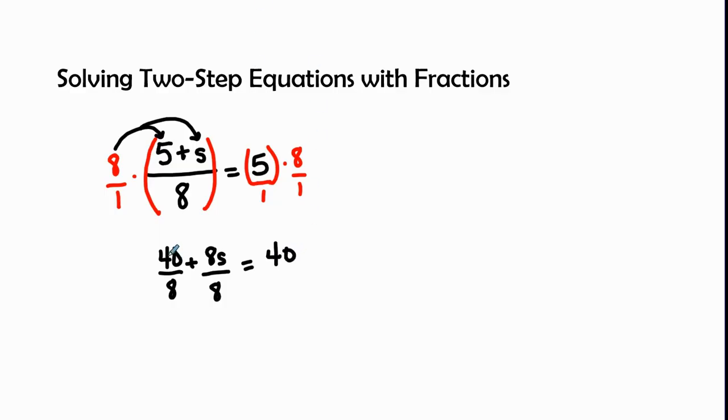So let's go ahead and simplify. 40 divided by 8 is 5 plus 8 divided by 8 is just the variable s equals 40.